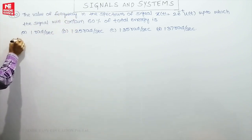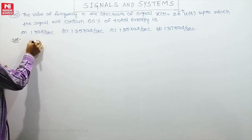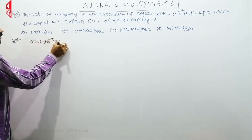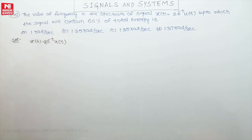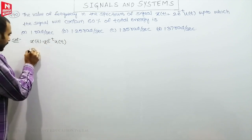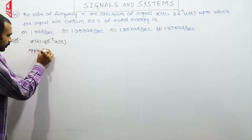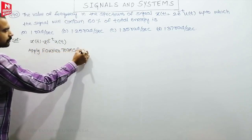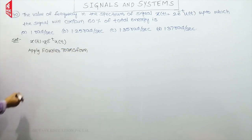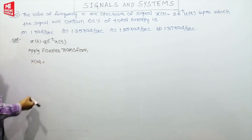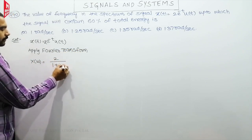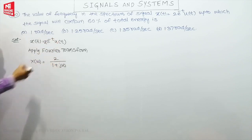For the solution, x(t) = 2·e^(-t)·u(t). Apply Fourier transform. If you apply Fourier transform, X(ω) is equal to 2 divided by (1 + jω), because a is equal to 1, so this value is equal to 1 + jω.